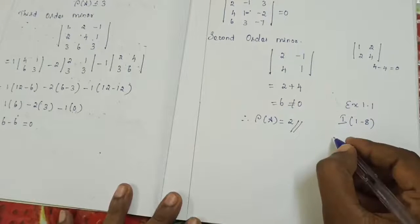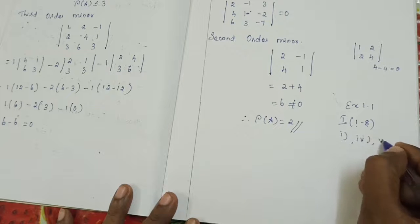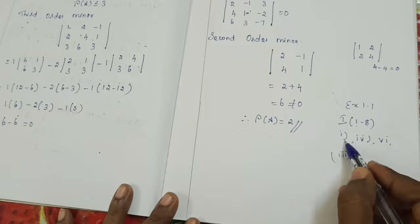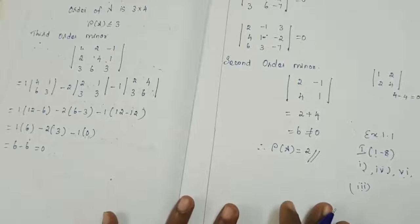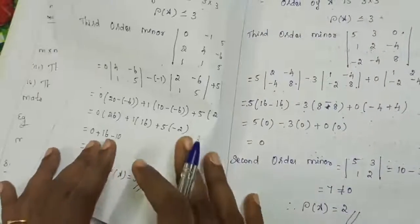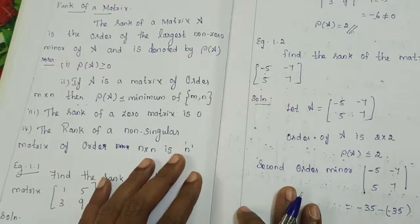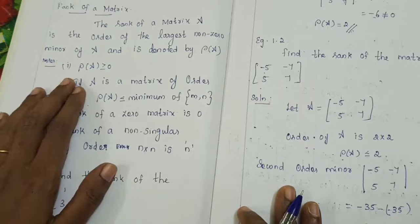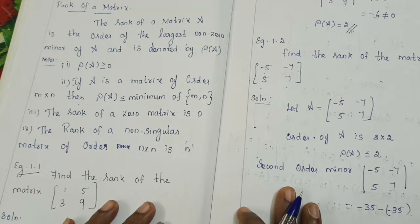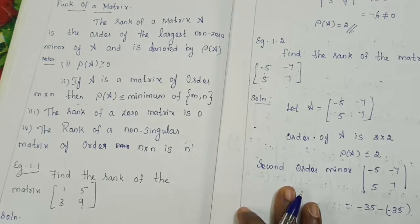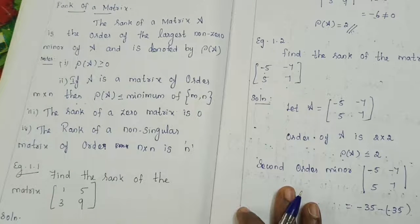Questions 1, 3, 4, and 6 are your home assignments. Try to complete them on your own. Here is an overview of what we have learned: rank of a matrix — definition: order of the largest non-zero minor of A. Notes: rho of A must be greater than or equal to 0; if A is of order m cross n, rho of A is less than or equal to minimum of m, n.